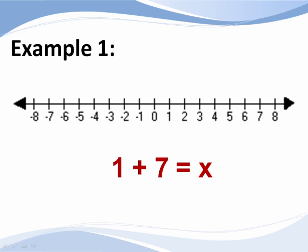To solve this problem on a number line, we start at 1, then move in the positive direction, 7 spaces, and we wind up at the number 8, which is of course what 1 plus 7 is, 8.